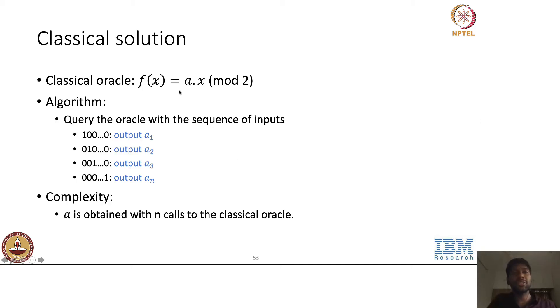Let's see what's the classical solution to solve this problem. It's quite straightforward. The first solution that you can think of. So the classical oracle, we know that f of x is a dot x mod 2. So simply query the oracle with this sequence of inputs. So the first input that you query is 1 followed by all zeros. The second input is 0, 1 followed by all zeros. And then third, you will have 1 at the third position and then 0 at the other positions. So similarly, you go on.